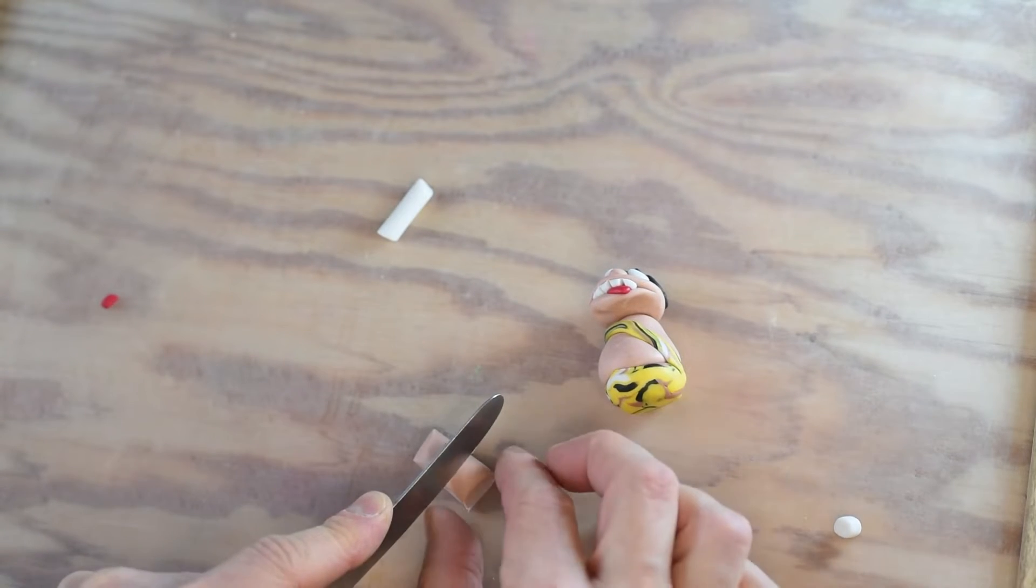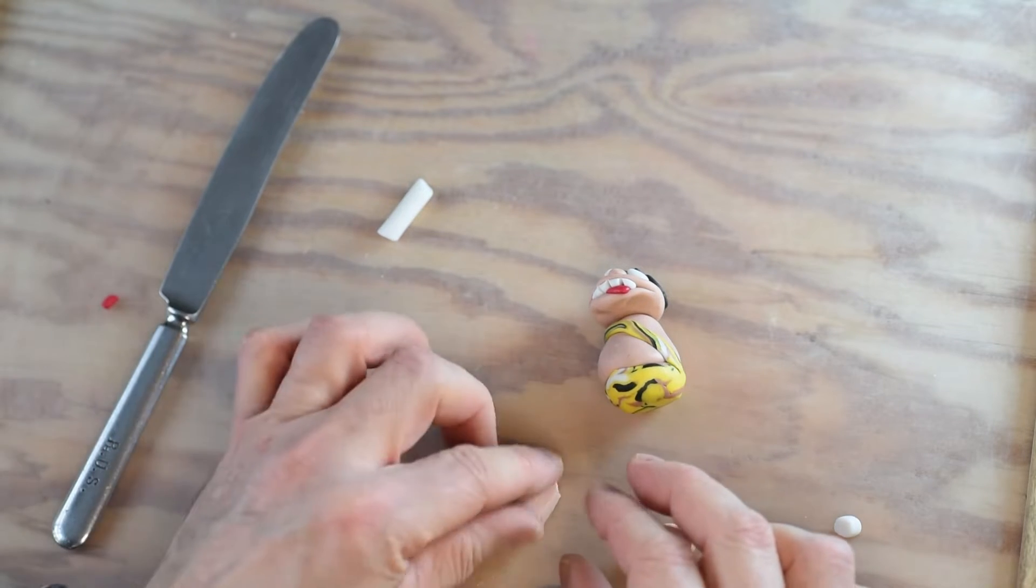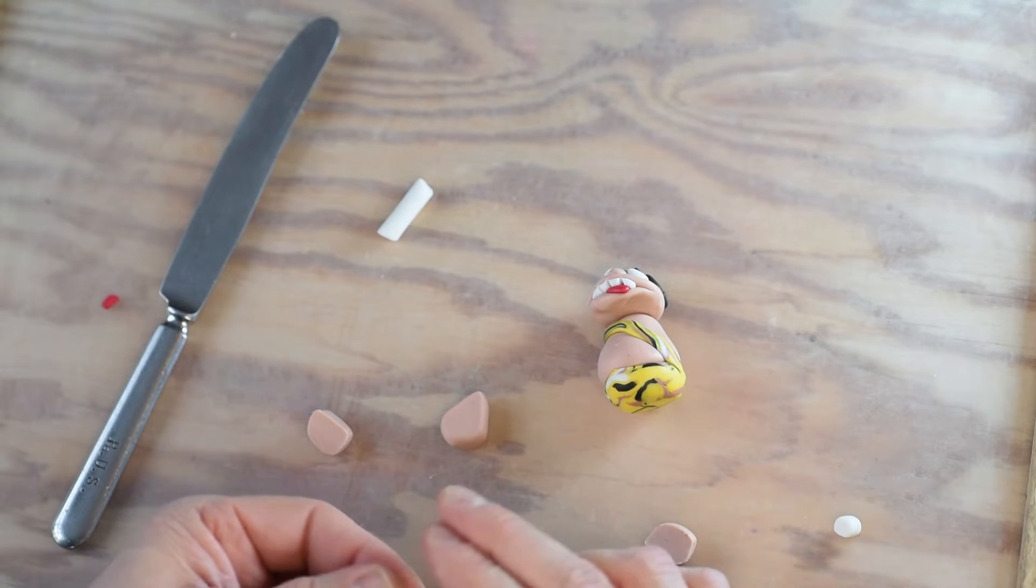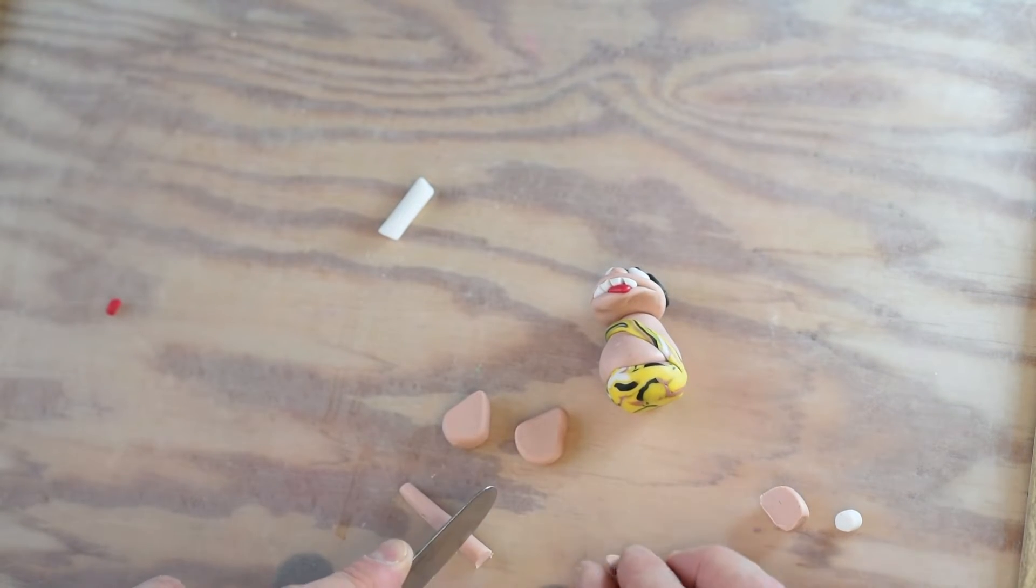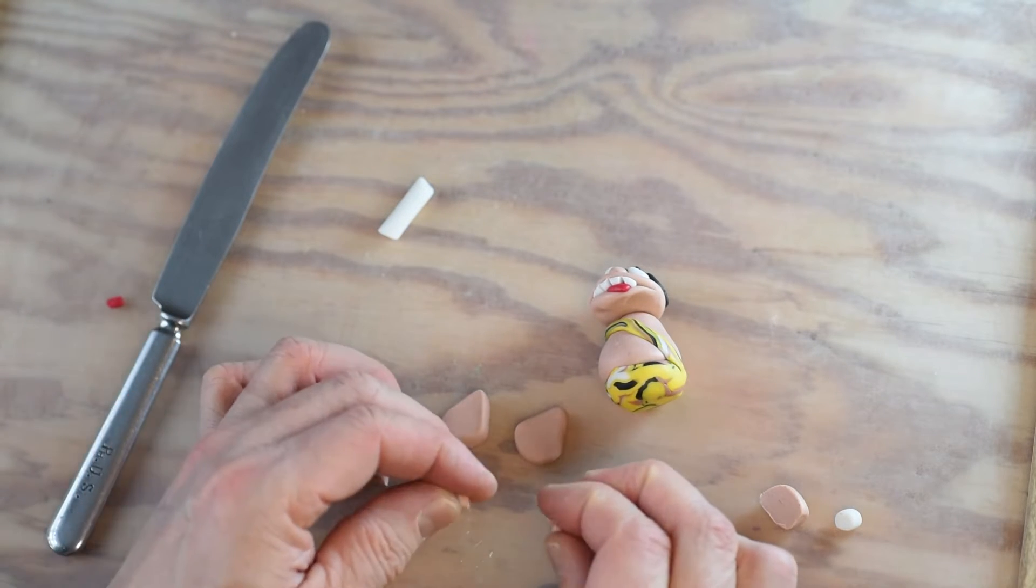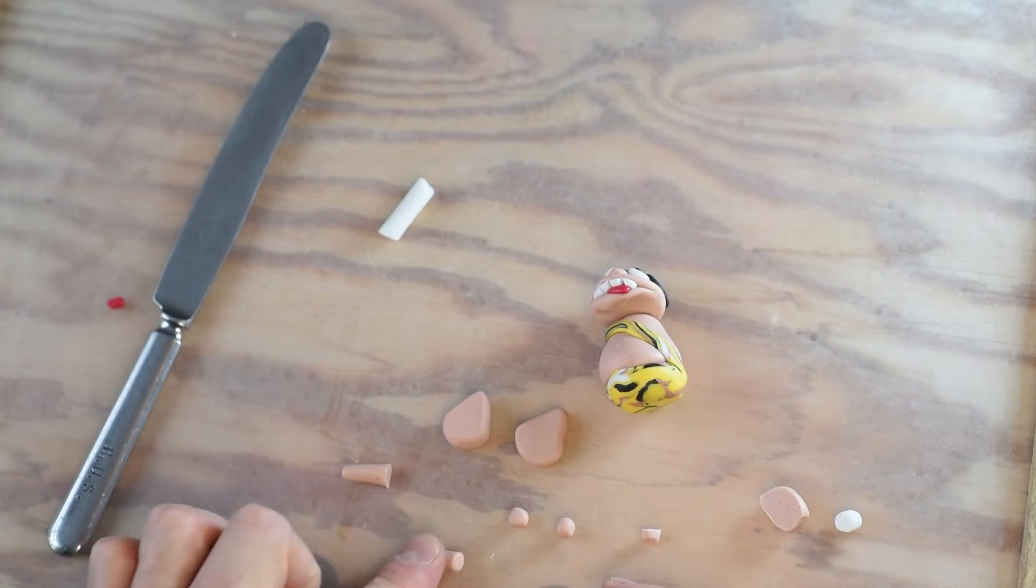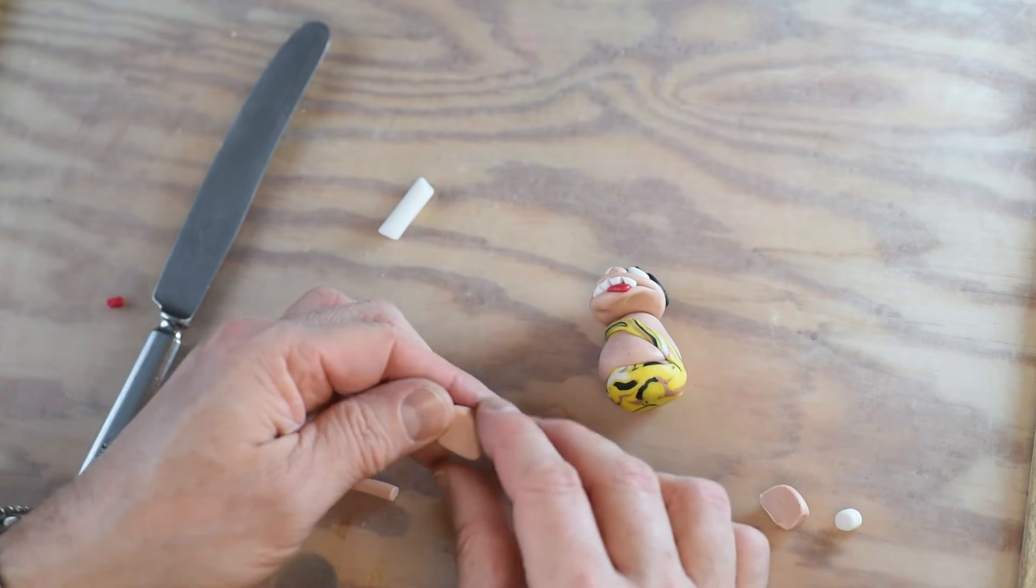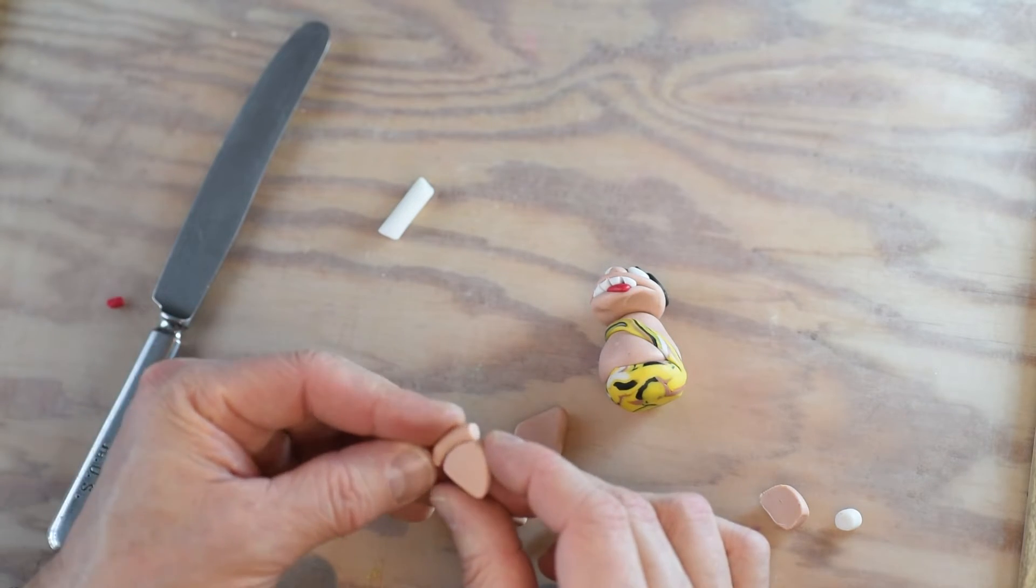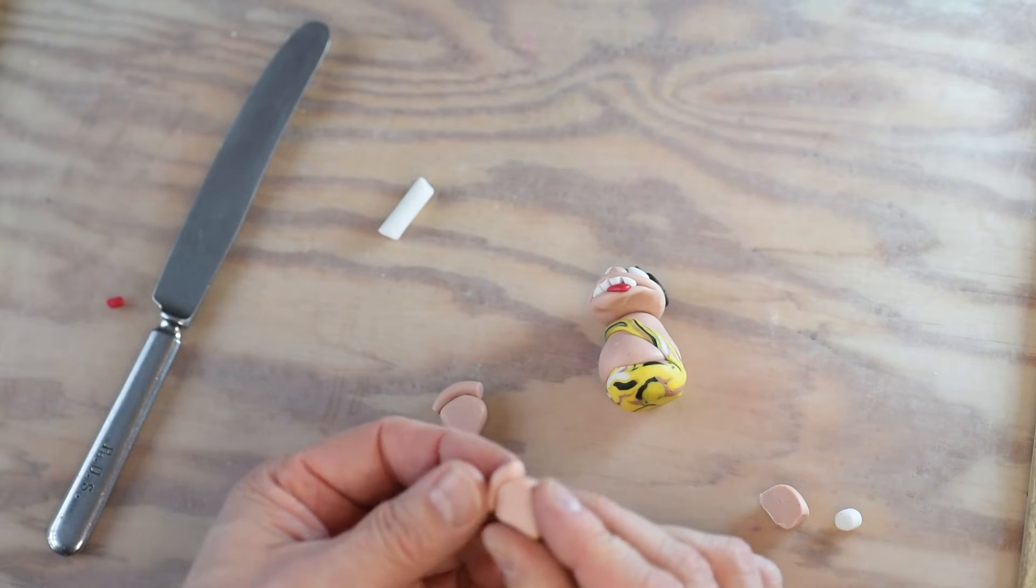It's now time to make the feet. Cut two pieces of brown. Make them into flat drop shapes. You need two big toes and also the rest of the toes. I always roll the big toes and then I roll a small, longer piece to make the rest of the toes. Attach them to the feet. You can of course make shoes too if you want to.